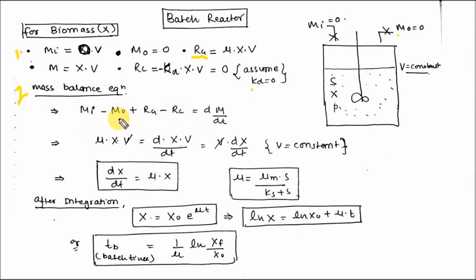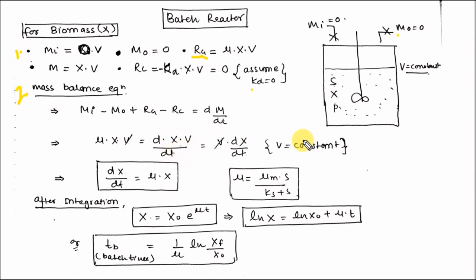Mi is 0, Mo is 0, and Rc is 0 because we assume KD equal to 0. Then Rg equals Mu·X·V. And dm by dt equals dX·V·dt, where V is constant, so it comes out from the differential equation as V·dX/dt.